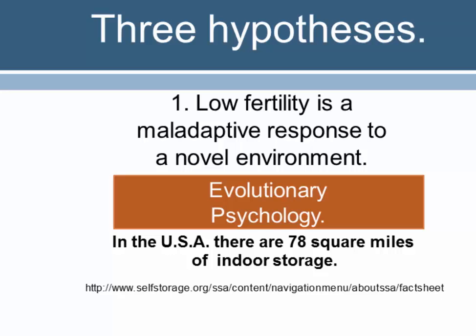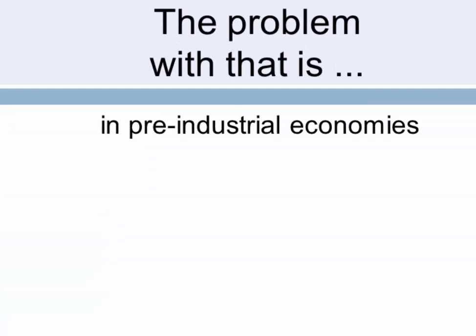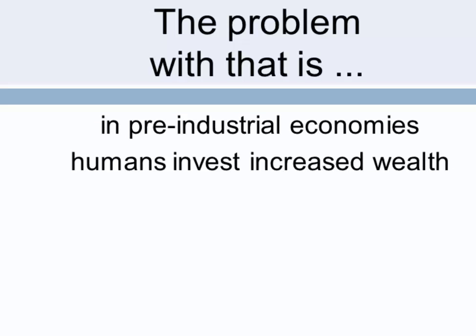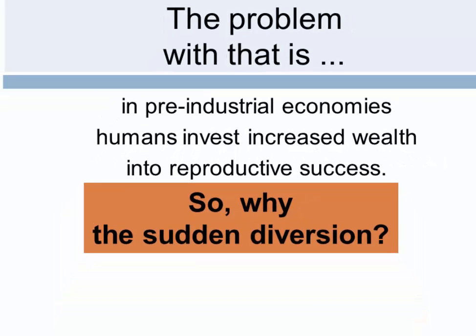As an example of this maladaptive response, in the USA there are 78 square miles of indoor storage space where people are storing their stuff, while family size continues to decline. However, the problem with this hypothesis is that in pre-industrial economies people routinely invested increased wealth into increased reproductive success, making it difficult to identify what it is about the current environment that leads to maladaptive decision-making.